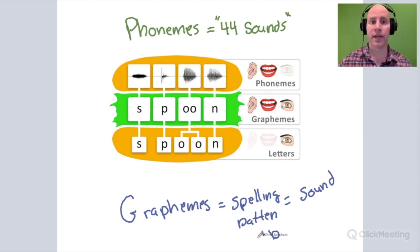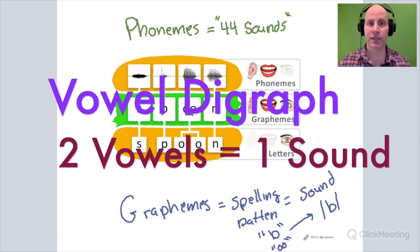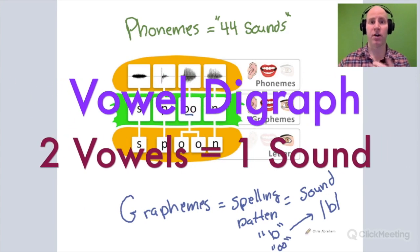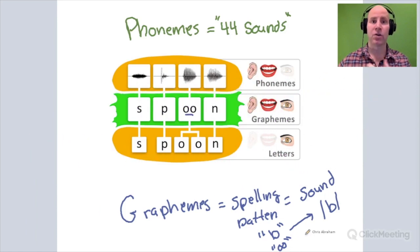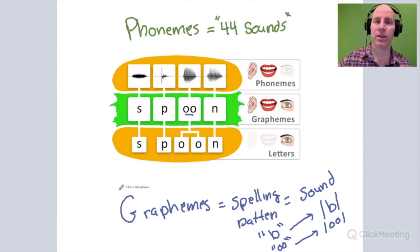For example, the letter B corresponds with the B sound. Or the double O in spoon, it's a vowel digraph. A vowel digraph are two vowels that make one sound, corresponds with the O sound. Whenever a child is taking the letters in a word, like the letters in the word spoon, and matching them up with their sounds, corresponding sounds...